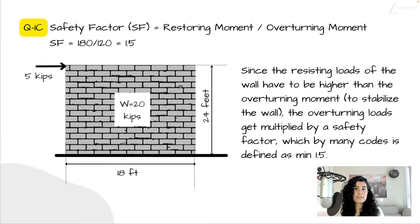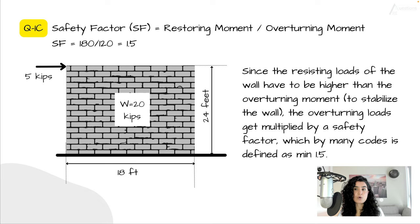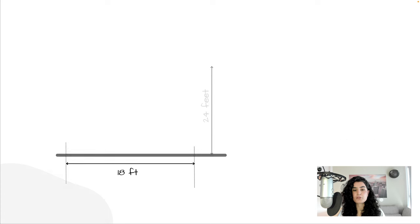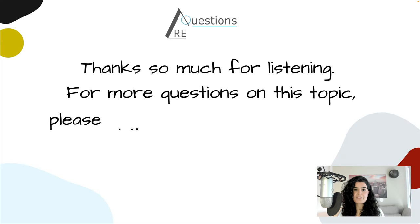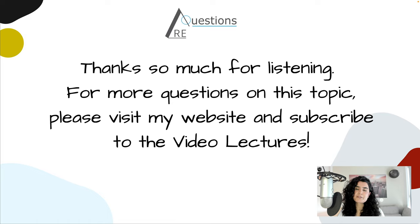The safety factor is the ratio between the restoring moment and the overturning moment, and it is typically required to be a minimum of 1.5 by building codes, because the resisting loads of the wall must be higher than the overturning moment to stabilize the wall. Dividing 180 by 120 gives 1.5, which is exactly the minimum requirement by building codes. Thanks for listening — for more questions on this topic, please visit my website and subscribe to the video lectures. Good luck with your studies and exams!